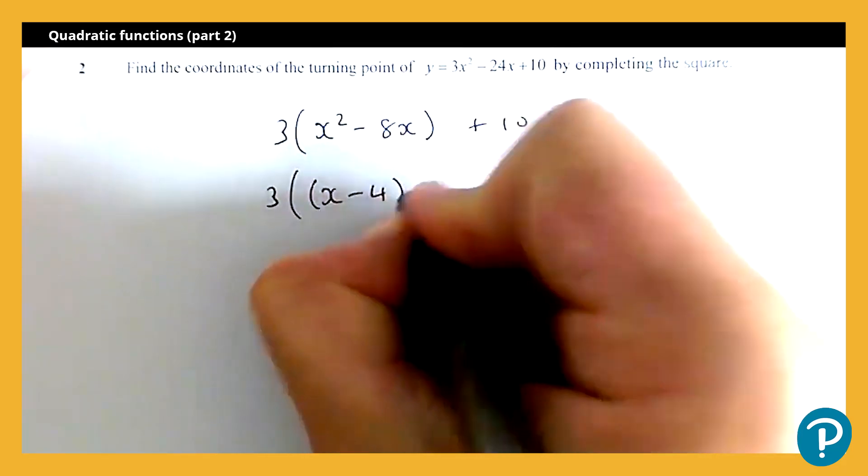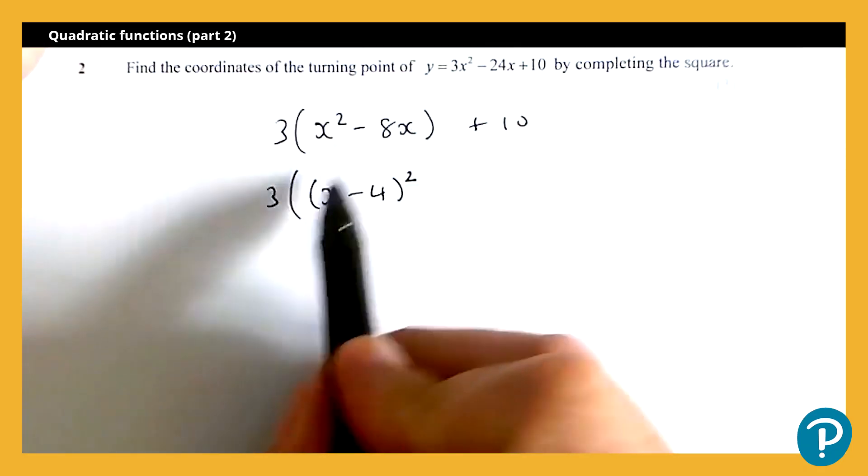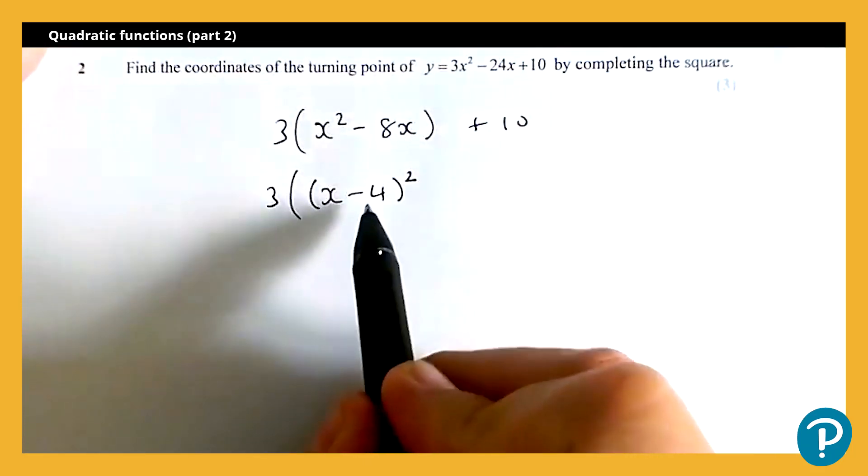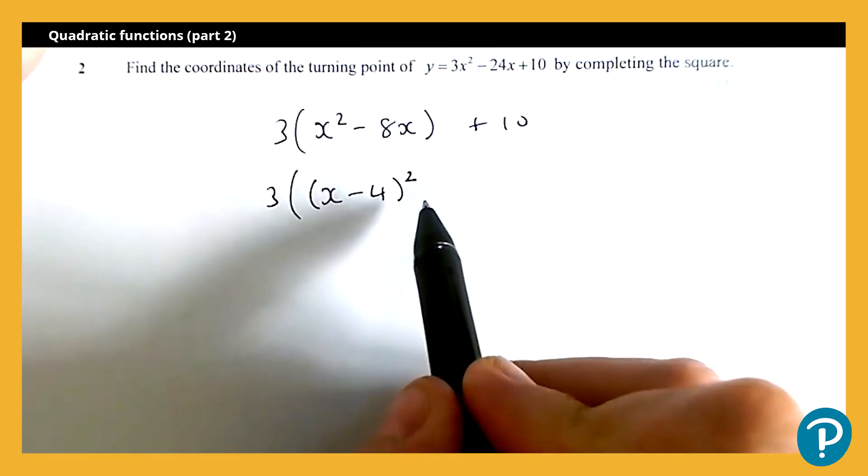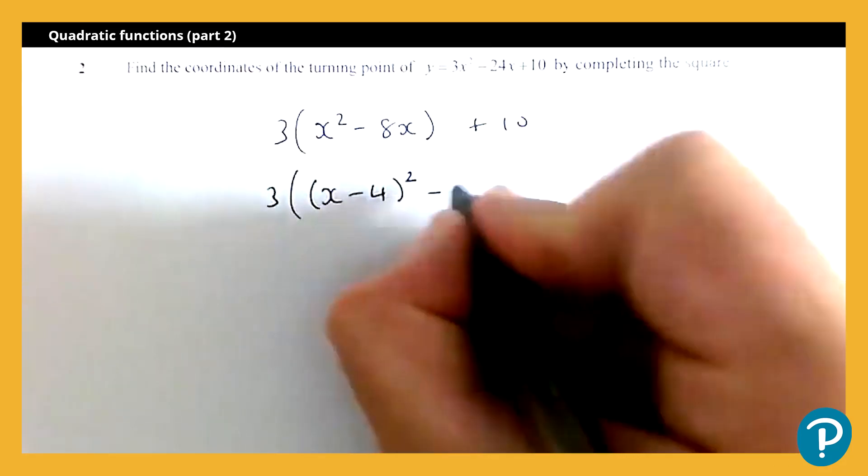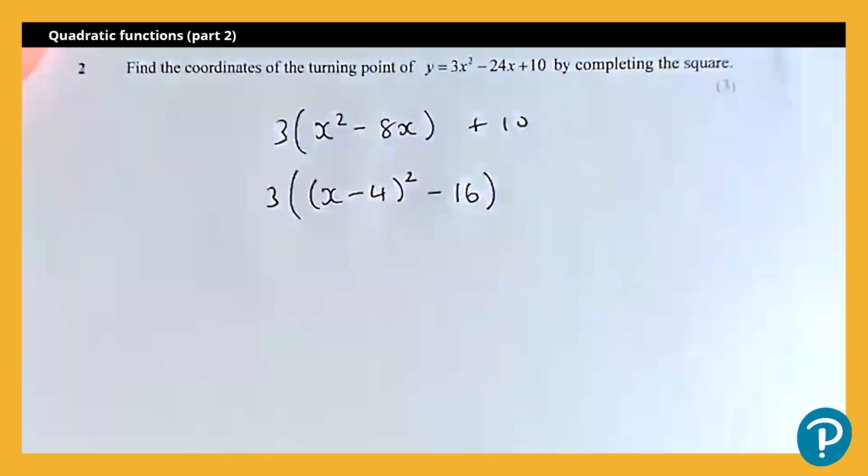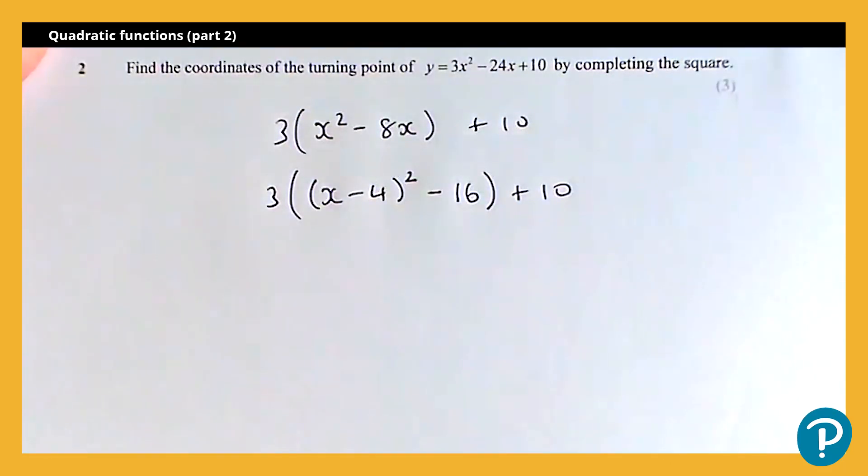Now if I was to expand this bracket, I would get x squared, good. I would get a negative eight x, great. But I would also get a plus 16. Now I don't want the plus 16, I don't have the plus 16 to start off with, so I'm going to have to take away 16 also. And then I've got plus 10 which I've just left alone.